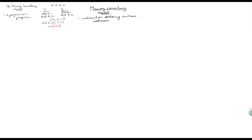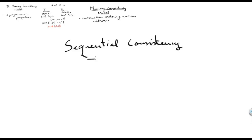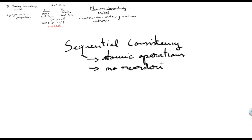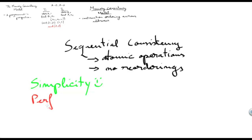Let's first look at an ideal memory consistency model from the point of view of a programmer — the most convenient and easiest one to use. That memory consistency model is called sequential consistency. In essence, what that means is that all instructions are executed atomically and there are no reorderings between memory instructions. The benefit of this memory model is its simplicity. The downside, however, is the fact that its performance is not the best it could be — there are various opportunities for optimization which this memory consistency model does not take advantage of.